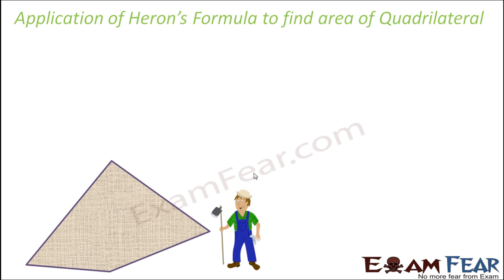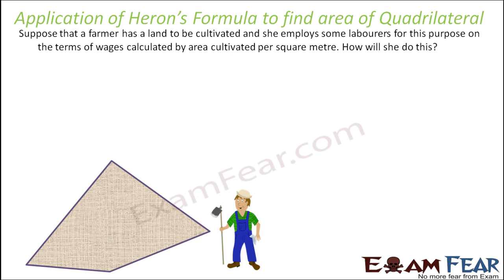Let's suppose there is a farmer who wants to find the area of his land, and this land can be in any quadrilateral shape. How can he find the area of the land? He can actually measure the boundary, but just measuring the boundary won't help him find the area. He wants to find the area because he wants to employ laborers to cultivate the whole land, and the wage will be based on the area of the land.